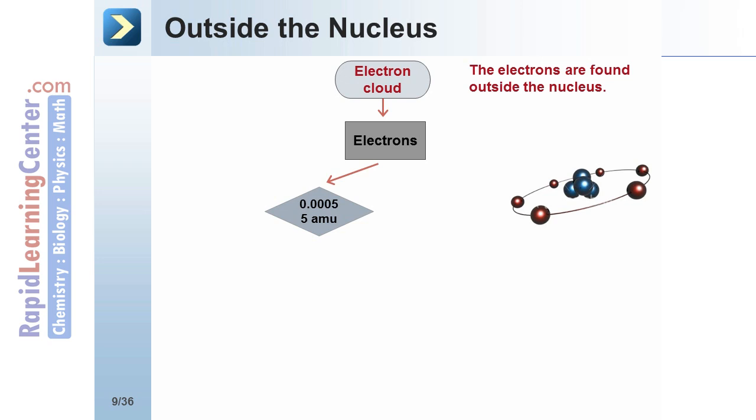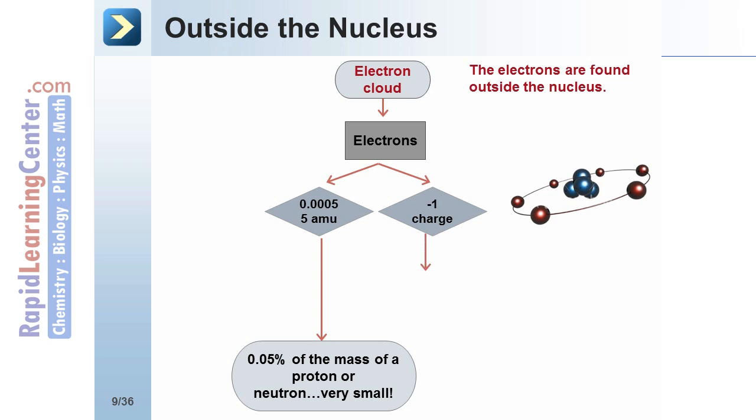Electrons do have mass, but it is such a small percentage of the atom scientists consider it to be approximately 0. Electrons have a negative 1 charge. This gives the outside of the atom an overall negative charge.